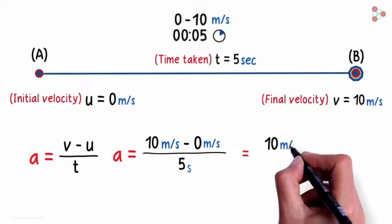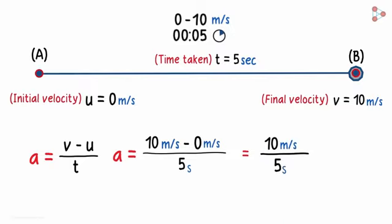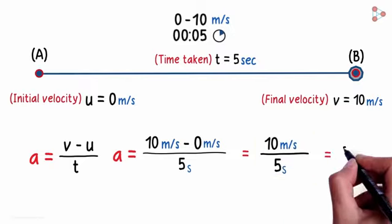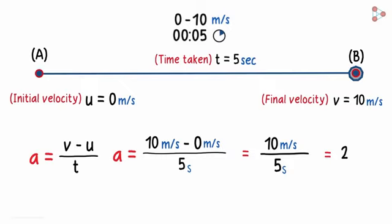10 divided by 5 seconds. 10 divided by 5 is 2. Wait, hold on. What will be the units of acceleration?